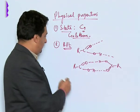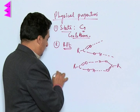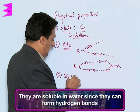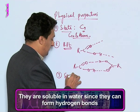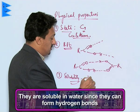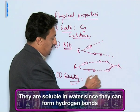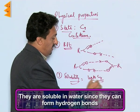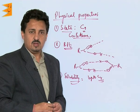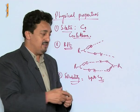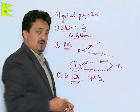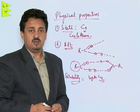Then let us talk about their solubility. Since they are able to form hydrogen bonds with water molecules, carboxylic acids up to C4 are miscible in water. However, higher ones are insoluble in water due to their bulky alkyl groups.